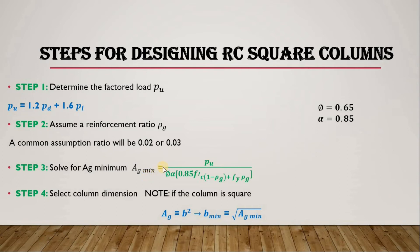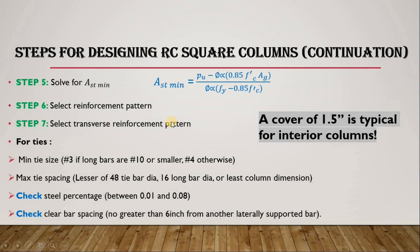Step four: assume the column dimension. For a square column, the gross area equals b squared, because the width and depth are the same. Therefore, the square root of the minimum gross area gives you b_min. Since the sizes are similar, the square root of Ag_min is the minimum dimension b.